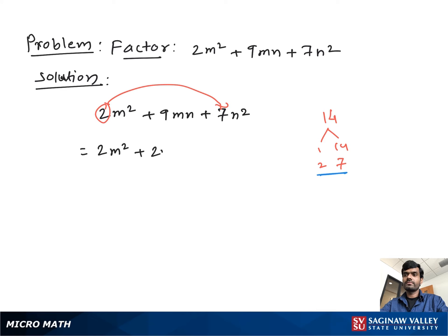So we can write 2m² plus 2mn plus 7mn plus 7n². Now from this pair we take out 2m as common. Then we have left m plus n.